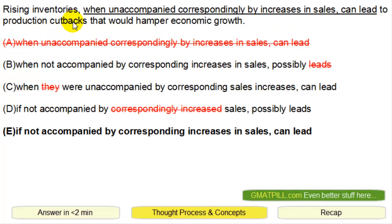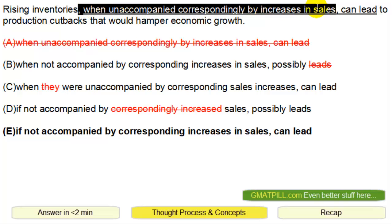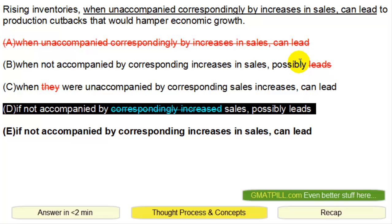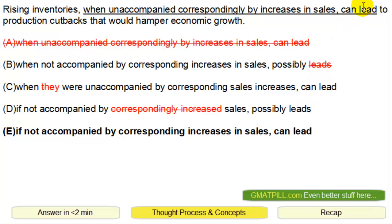In terms of concepts, this is a split sentence — you have a comma here and a comma here, and the main crux of the sentence is 'rising inventories can lead to production cutbacks.' The middle part is just a descriptive phrase. So it has to be 'lead,' it cannot be 'leads' — that's why B and D are no good.